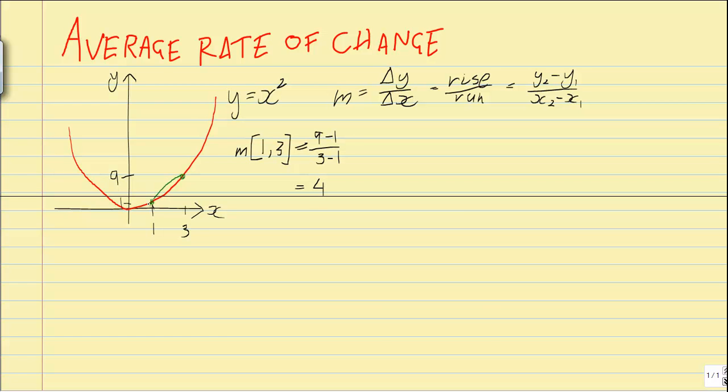What this means is across the interval 1 to 3, when x goes from 1 to 3, on average the gradient or rate of change is 4. In reality, it only equals 4 at one tiny point, but on average it's 4.